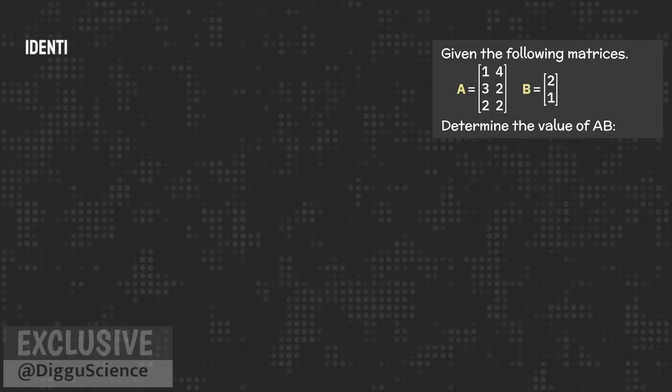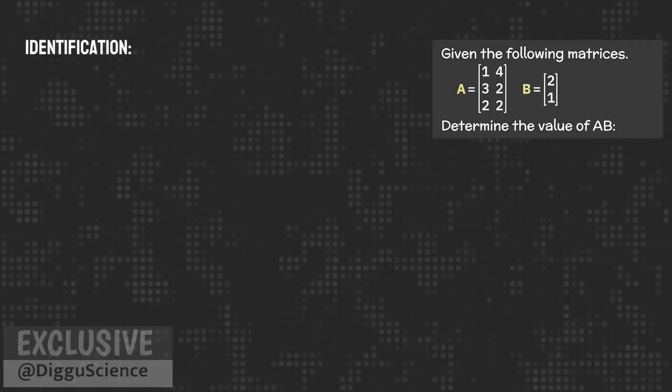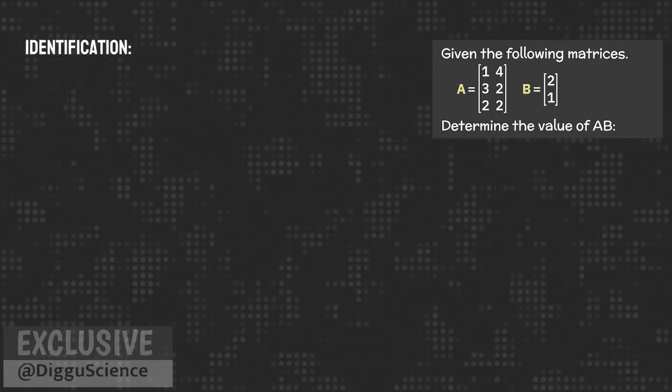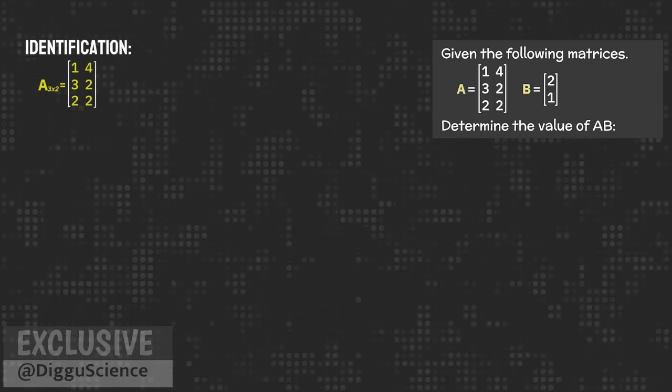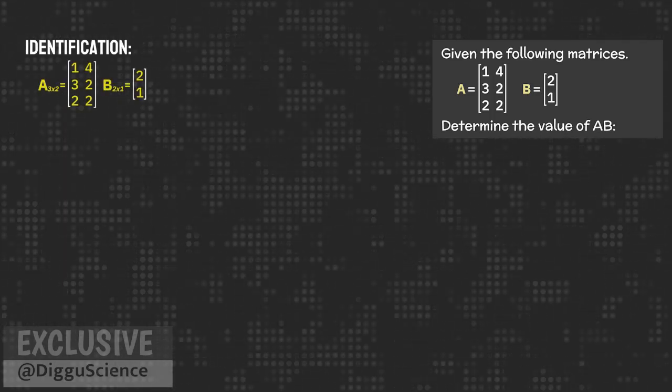Okay, the first step is identification. The order of matrix A is 3 by 2. The order of matrix B is 2 by 1.